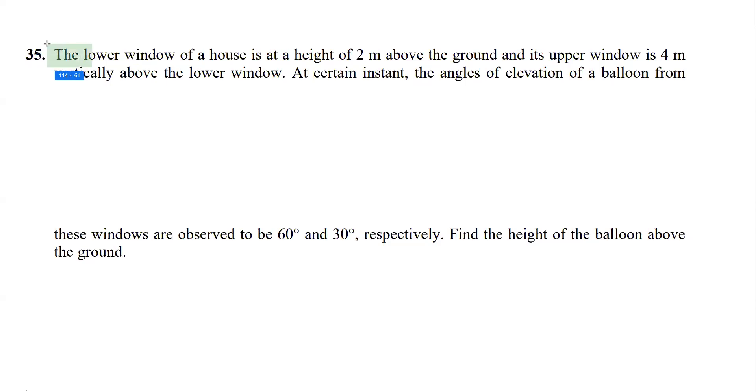This question is from height and distance. It says the lower window of a house is 2 meters above the ground and the upper window is 4 meters vertically above the lower window.